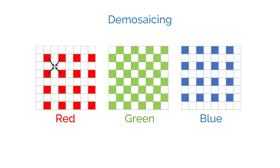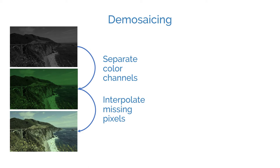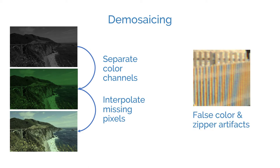Modern demosaicing algorithms are more sophisticated than simple pixel averaging though. For example, they employ smarter interpolation methods to prevent false color and zipper artifacts.